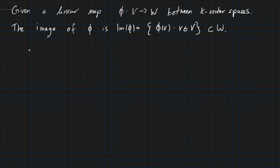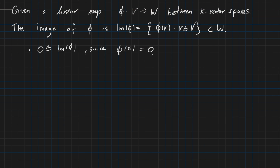First, the image is not empty, because for example 0 is part of the image of phi, since phi maps 0 to 0. In the last video we proved why this is the case for all linear maps — all linear maps map 0 to 0.